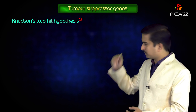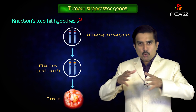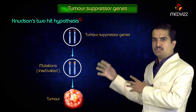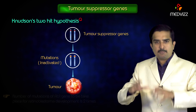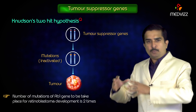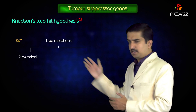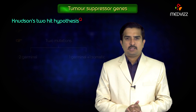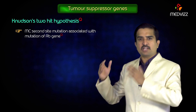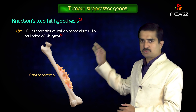According to Knudsen's two-hit hypothesis, both copies of a tumor suppressor gene must be inactivated for tumor formation. The number of mutations of the RB1 gene required for retinoblastoma development is two. These two mutations can be two germinal mutations or one germinal plus one somatic mutation. The most common second-site mutation associated with mutation of the RB gene leads to osteosarcoma.